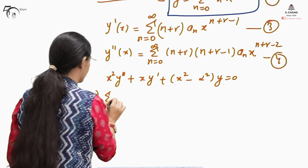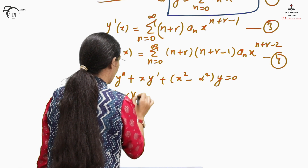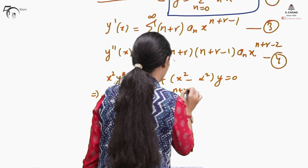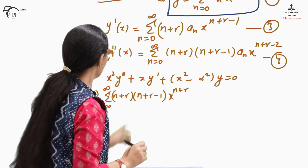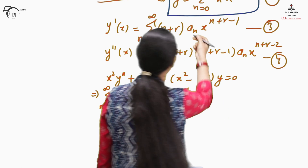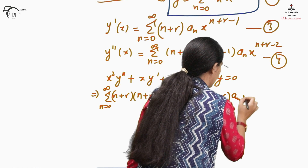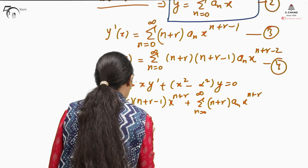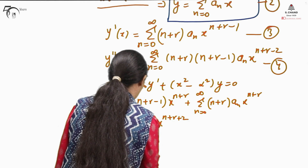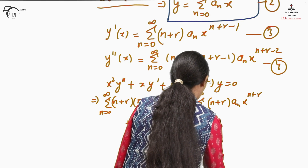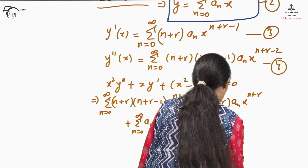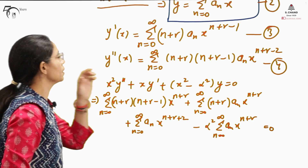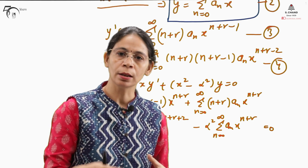Starting the substitution: the first term gives Σ(n+r)(n+r-1)·aₙ·x^(n+r), with n from 0 to ∞. The next term gives Σ(n+r)·aₙ·x^(n+r), n from 0 to ∞. The x²·y term gives Σaₙ·x^(n+r+2), n from 0 to ∞, and the -α²·y term gives -α²·Σaₙ·x^(n+r), n from 0 to ∞. This is the full expression after substituting expressions 2, 3, and 4 into the differential equation.